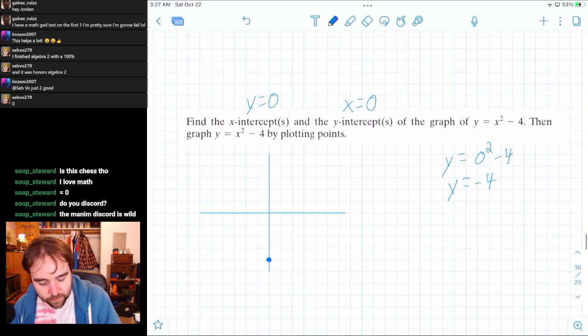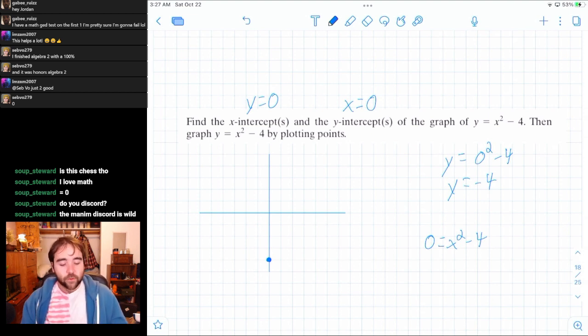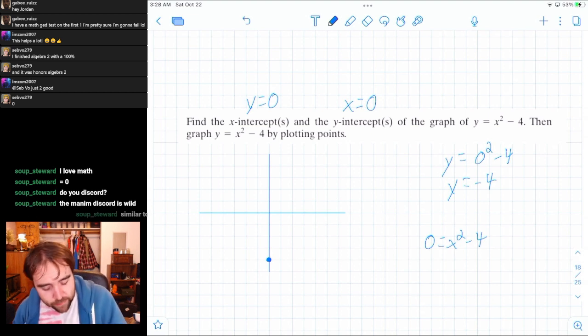But anyway, let's find the x-intercepts now. So for the x-intercept, we're going to set the y equals to zero. And then we're going to solve for x. So how do you solve this for x? We've got a couple ways. My preferred way, to be honest, is to factor it because that's another critical thing.